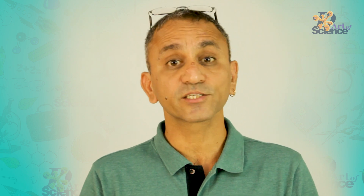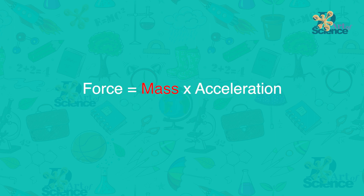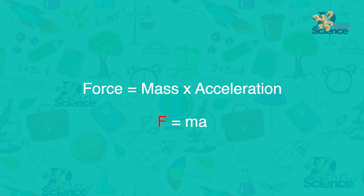In general terms, magnitude loosely means how large something is, and direction means where is it going. Therefore the strength of the force is expressed by its magnitude. The SI unit to measure this magnitude of force is called Newton, written in short as capital N. Force is equal to mass into acceleration — F for force, M for mass, A for acceleration.